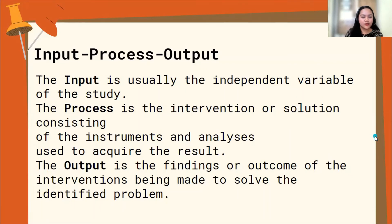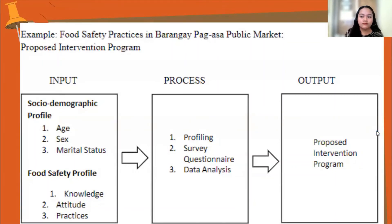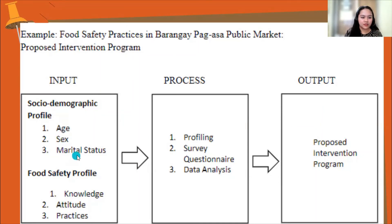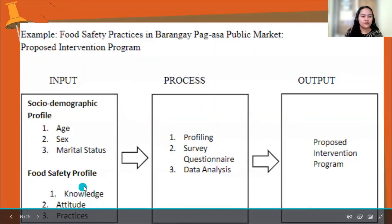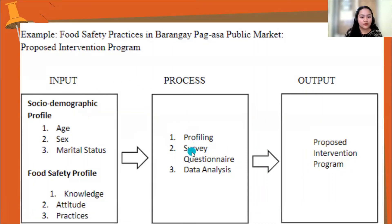Technically, the Input Process Output is like a drawing of your research — how you will conduct your research, but in diagram form. For example, the input includes social demographic profile such as age, sex, marital status, and food safety profile covering knowledge, attitude, and practice. The process includes profiling, survey questionnaire, and data analysis. The output is the anticipated result, which is the proposed intervention program.